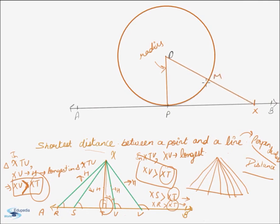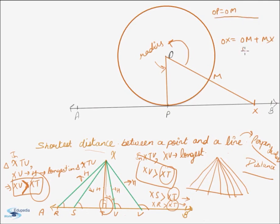Let the point of intersection with the circle be M. Clearly, OM is also the radius. Thus, OP is equal to OM. Now, OX is equal to OM plus MX, and OM can be substituted as OP. Since an additional quantity MX is being added to OP to get OX, we can say that OX is greater than OP.